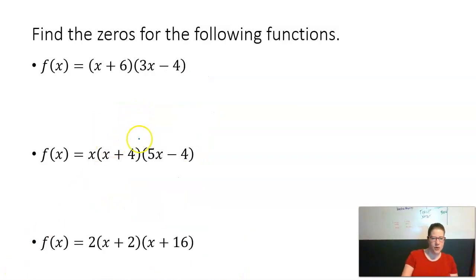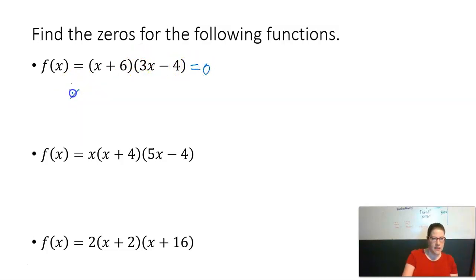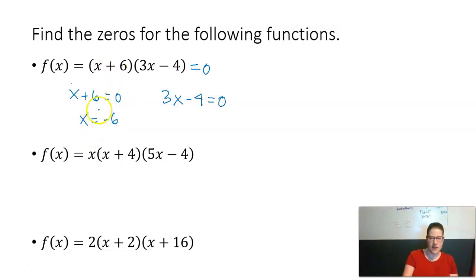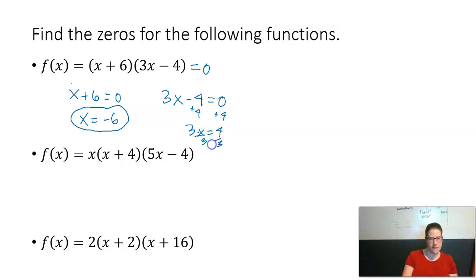In this example, notice the second factor has a coefficient in front of x, so it's a bit different — don't just change the sign. Set each factor equal to zero and solve for x. The first factor (x+6) = 0 gives x = negative 6 as before. For the second factor (3x-4) = 0, add 4 to both sides, then divide both sides by 3, giving x = four thirds.